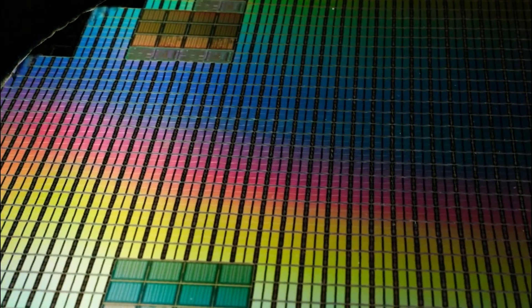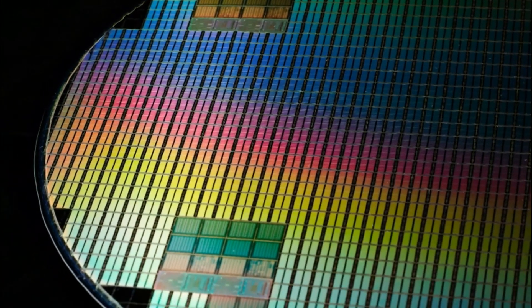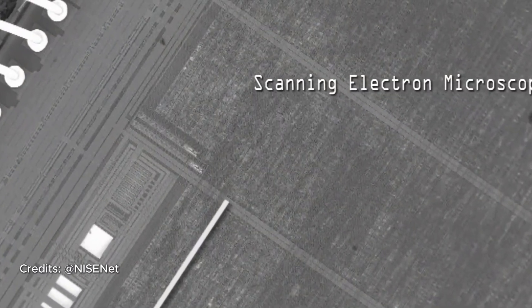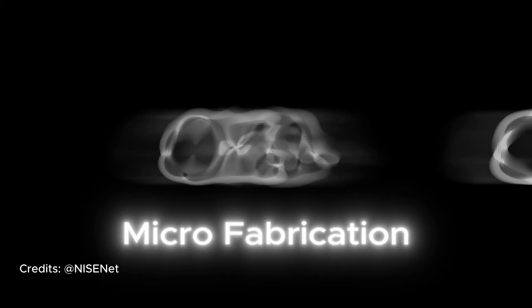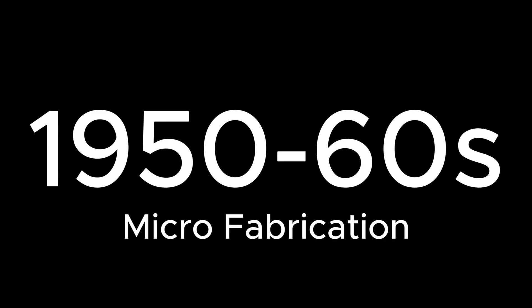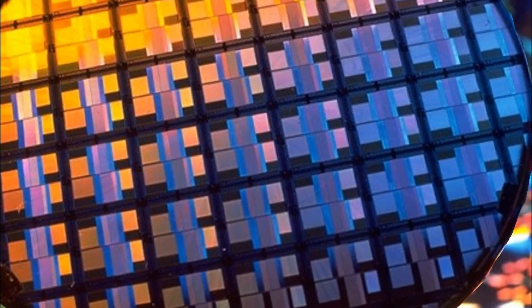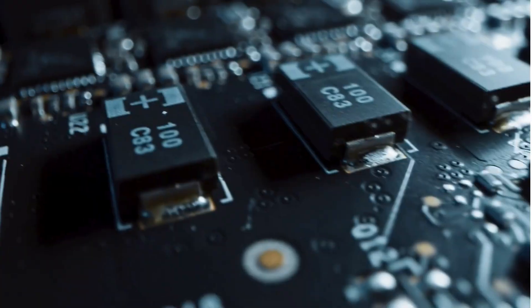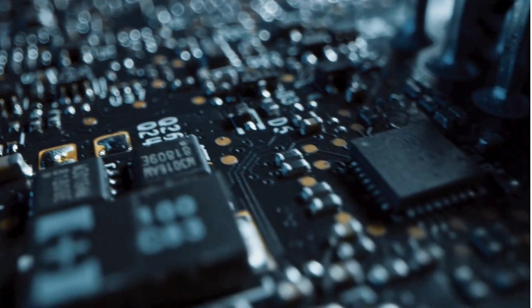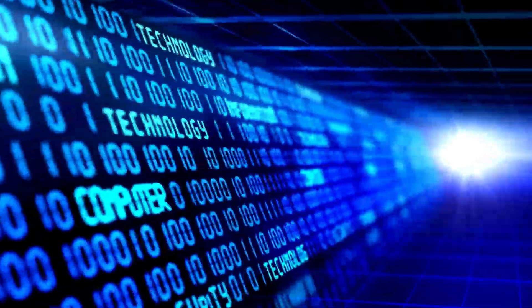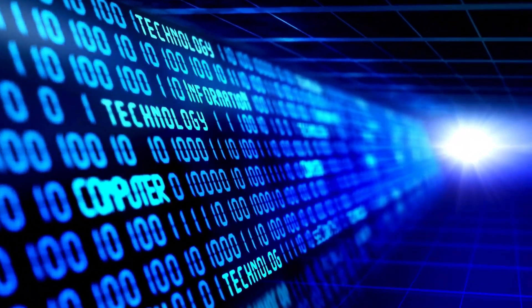To fit those transistors onto a wafer of silicon, we needed the science of microfabrication, the ability to etch circuits thousands of times thinner than a human hair. And those transistors don't work alone. They're organized into logic circuits, built from logic gates, which follow strict rules of digital encoding using ones and zeros to process information.